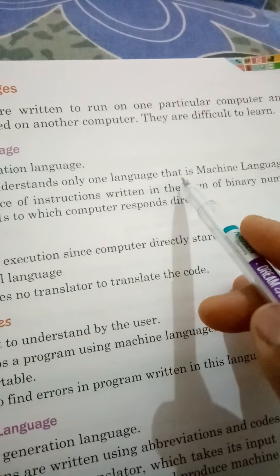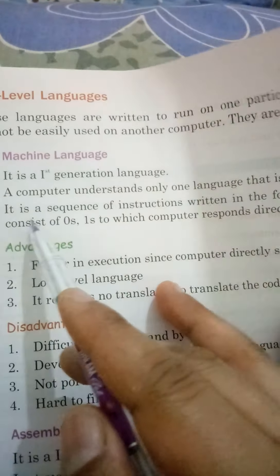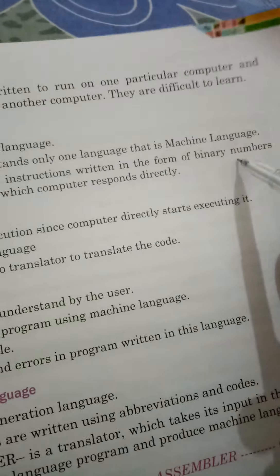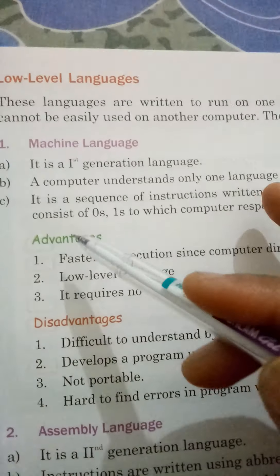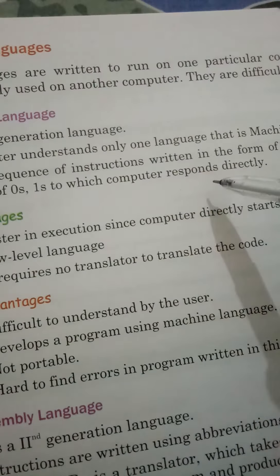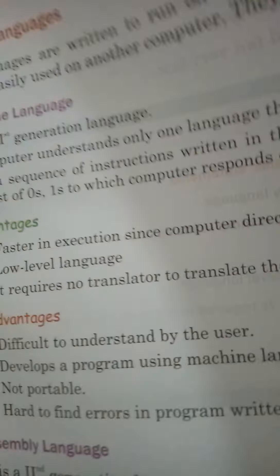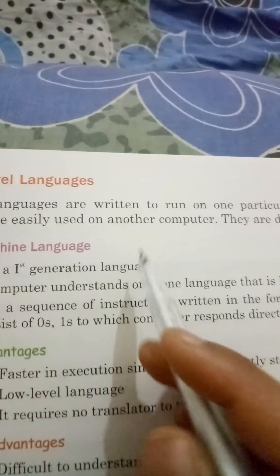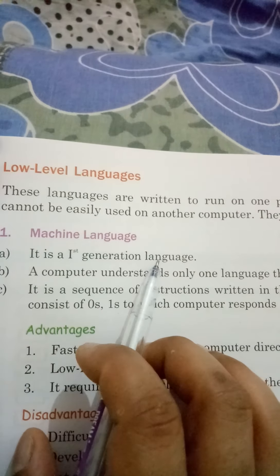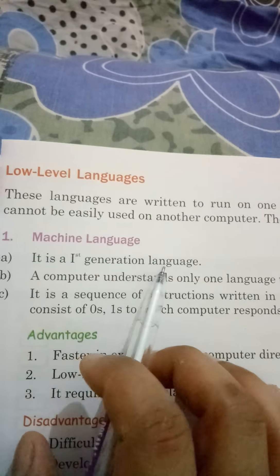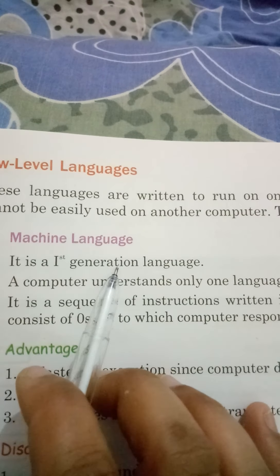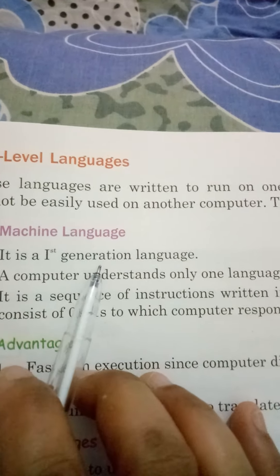Machine language is the first type of low-level language. It is a first-generation language. A computer understands only one language, that is, machine language. It is a sequence of instructions written in the form of binary numbers, consisting of zeros and ones, to which the computer responds directly.